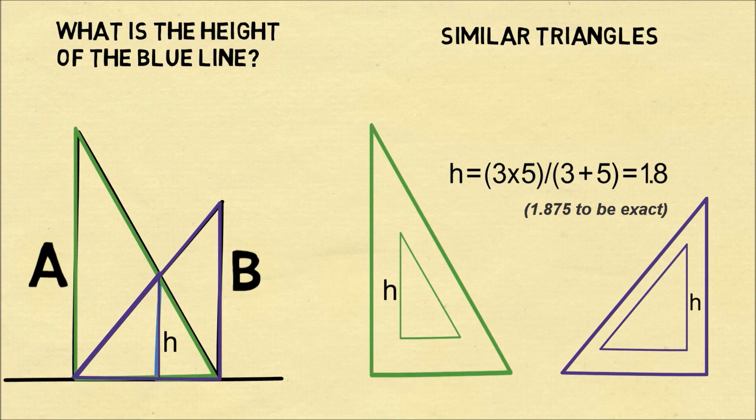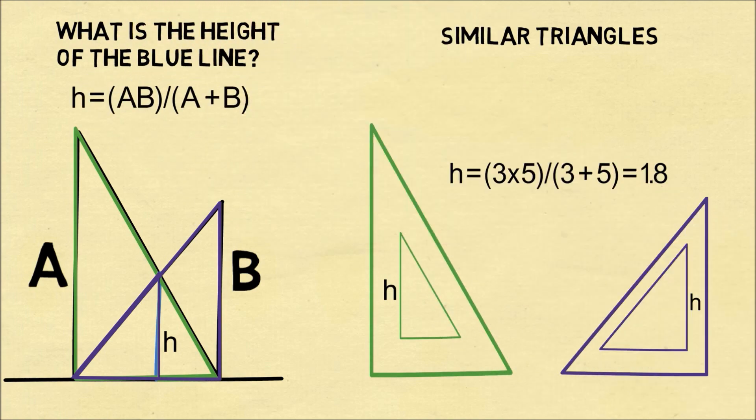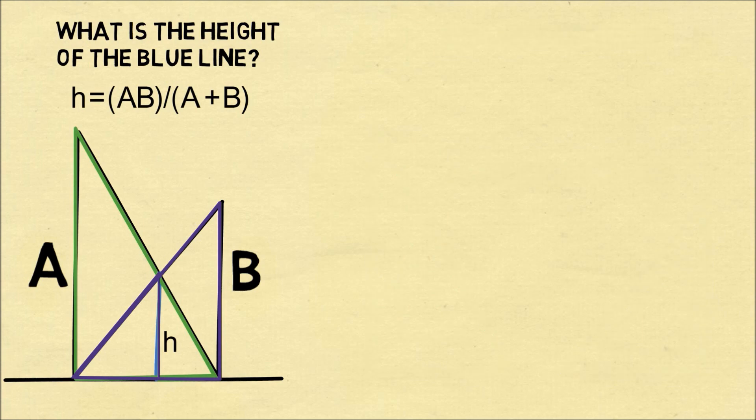Now let's generalize the problem. Imagine one wall has a length of a, another has a length of b. We can go through the same steps and we can conclude the height is equal to a times b over a plus b. And this is interesting. It doesn't depend on the distance between the walls.